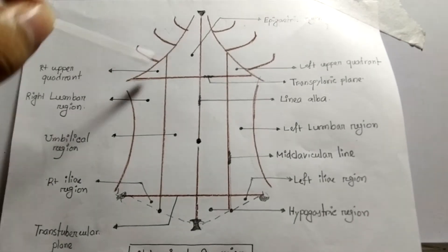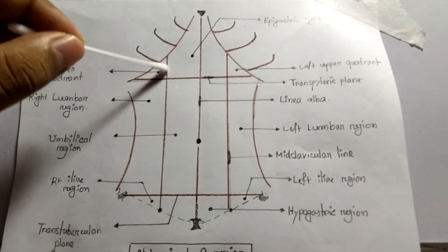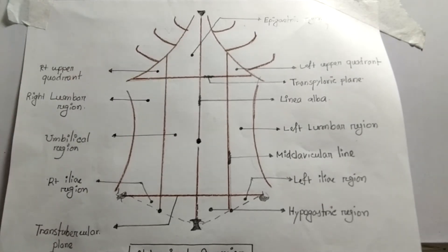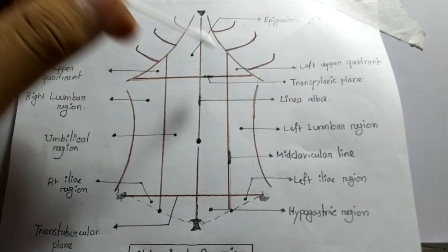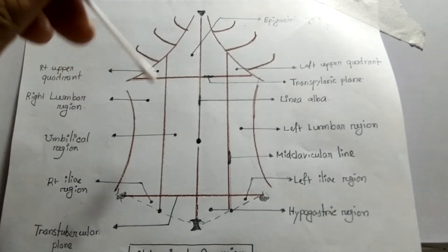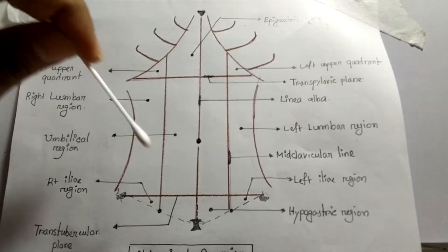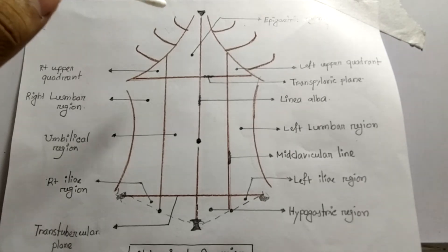The remaining portion is called the hypogastric region. The transpyloric plane and the right-sided vertical plane make a triangular gap — this is called the right upper quadrant. Similarly on the left side, it is called the left upper quadrant. These regions are clinically very important to understand the visceral relations, and are also important surgically to understand the location of the viscera.